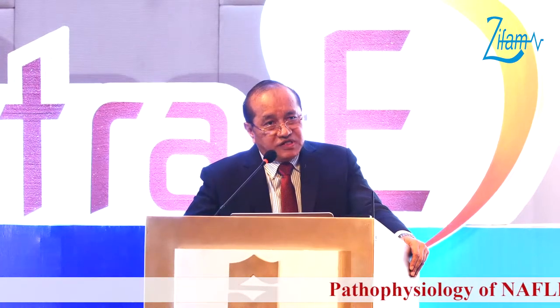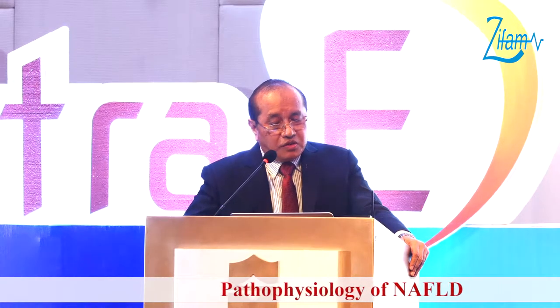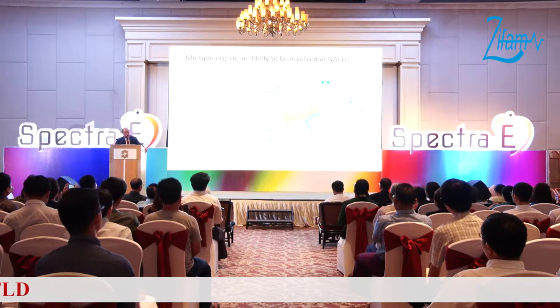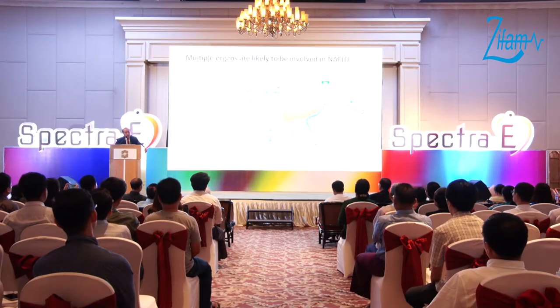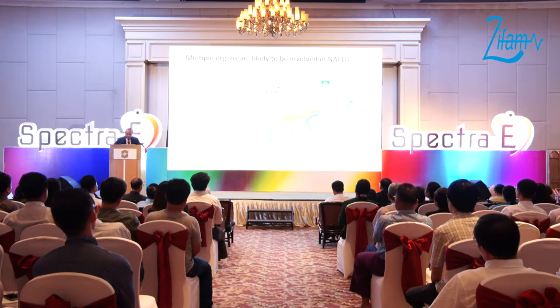The involvement of NAFLD involves multiple organs, not only the liver. The intestine, the liver, the pancreas, the adipocytes, the brain, the muscles — and there is a crosstalk between these glucose or energy-utilizing tissues and the energy-controlling organs.